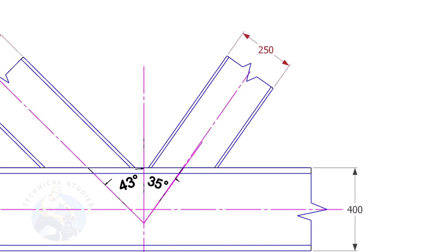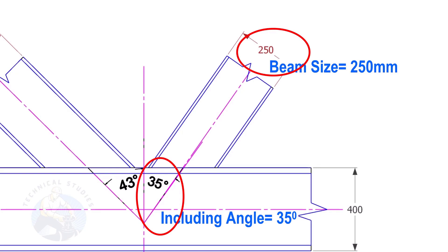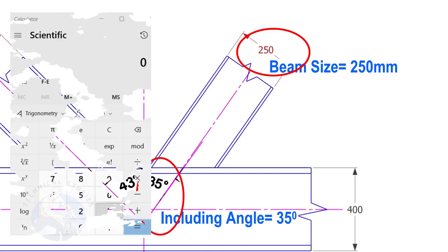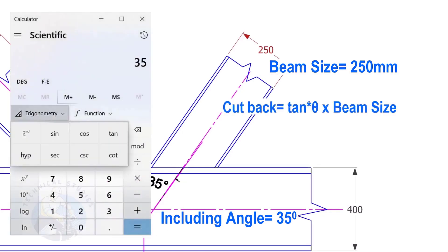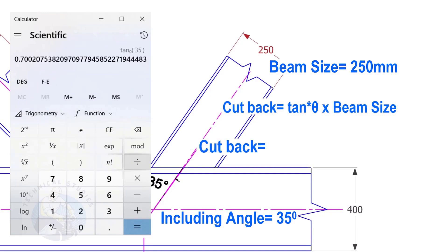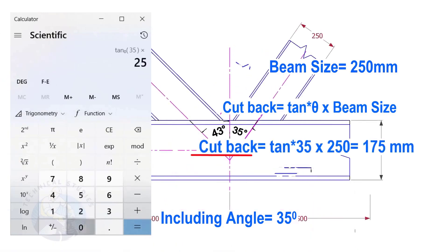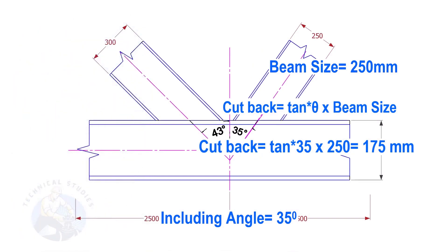Here, the size of the beam is 250 and the including angle is 35. Let us calculate the cutback. The cutback for this beam is 175 millimeters.